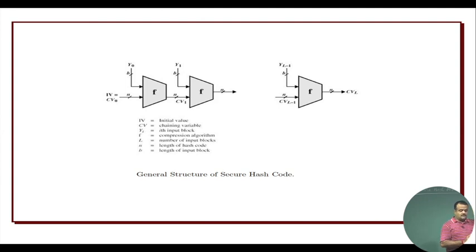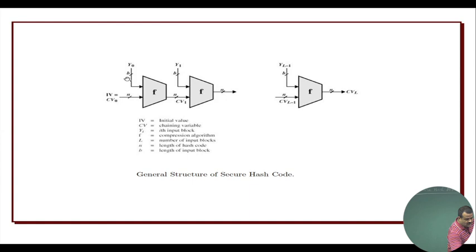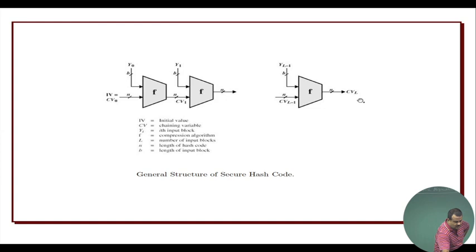Let us look at the general structure of a secured hash code. Any hash function has this structure — we decompose the message into fixed length blocks. We have an arbitrary length message, and we partition it into Y1, Y2, ..., Y(L-1), so there are L blocks each of size b bits. We have a compression function f which takes an n-bit and b-bit input and gives an n-bit output. This is the initialization value CV0, and all the CVs are intermediate values. Finally, CV_L is our hash code.